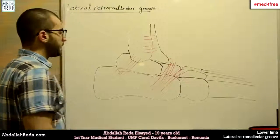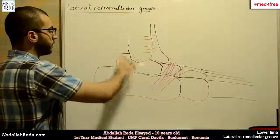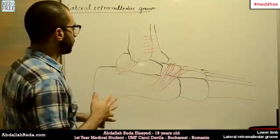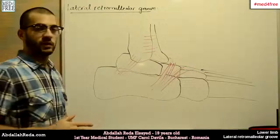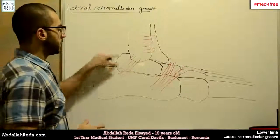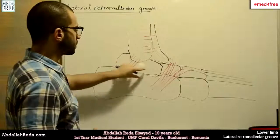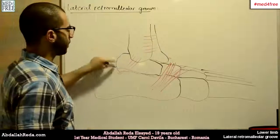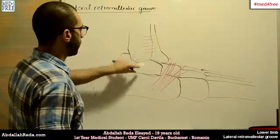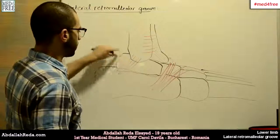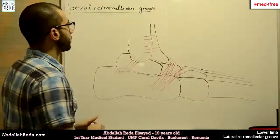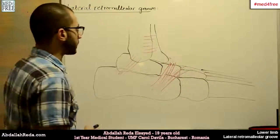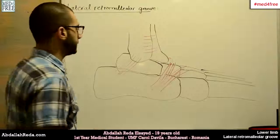The elements that pass through the groove are the following: we have the peroneus longus and peroneus brevis tendons — both tendons of both muscles pass through the groove. We also have the peroneal artery and the peroneal vein.